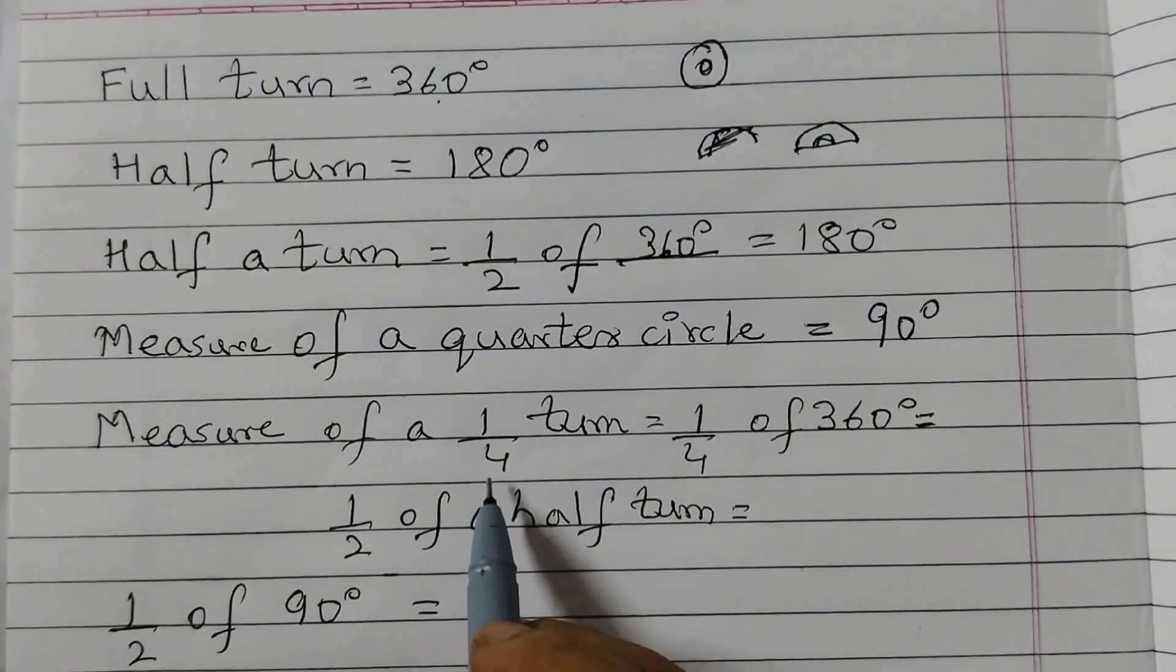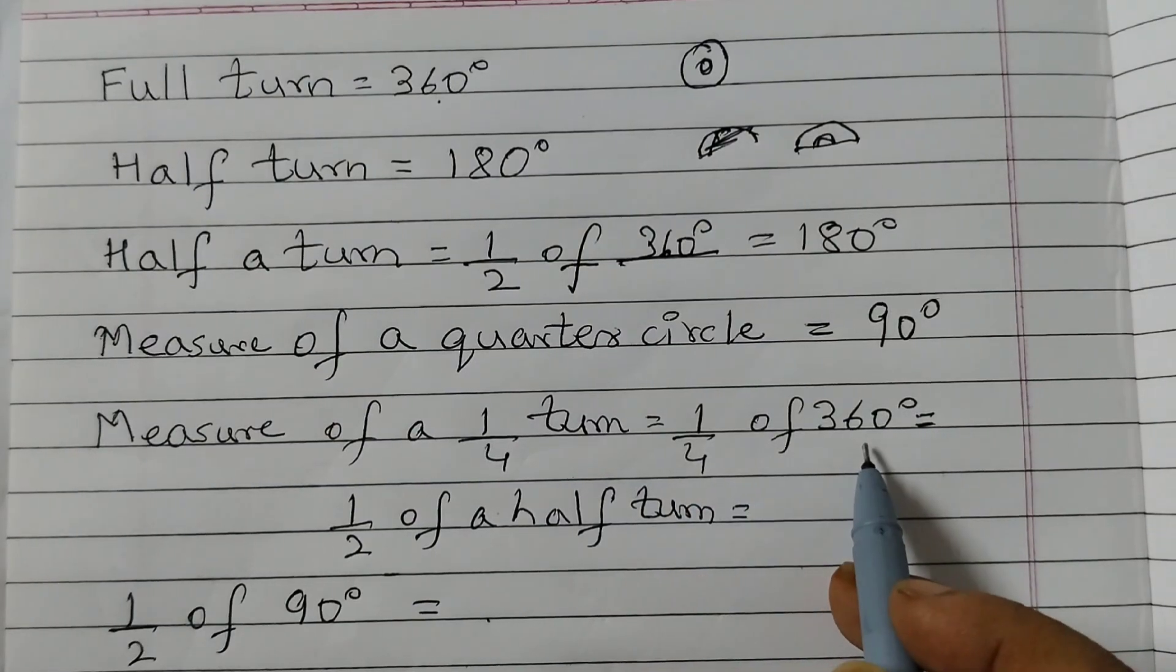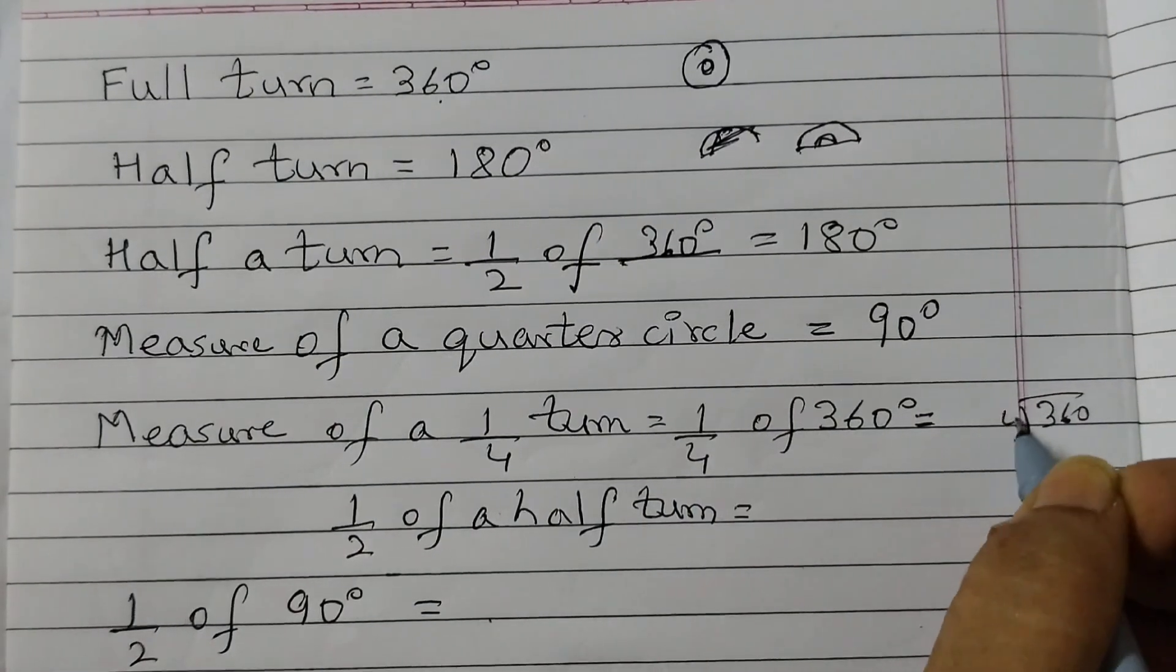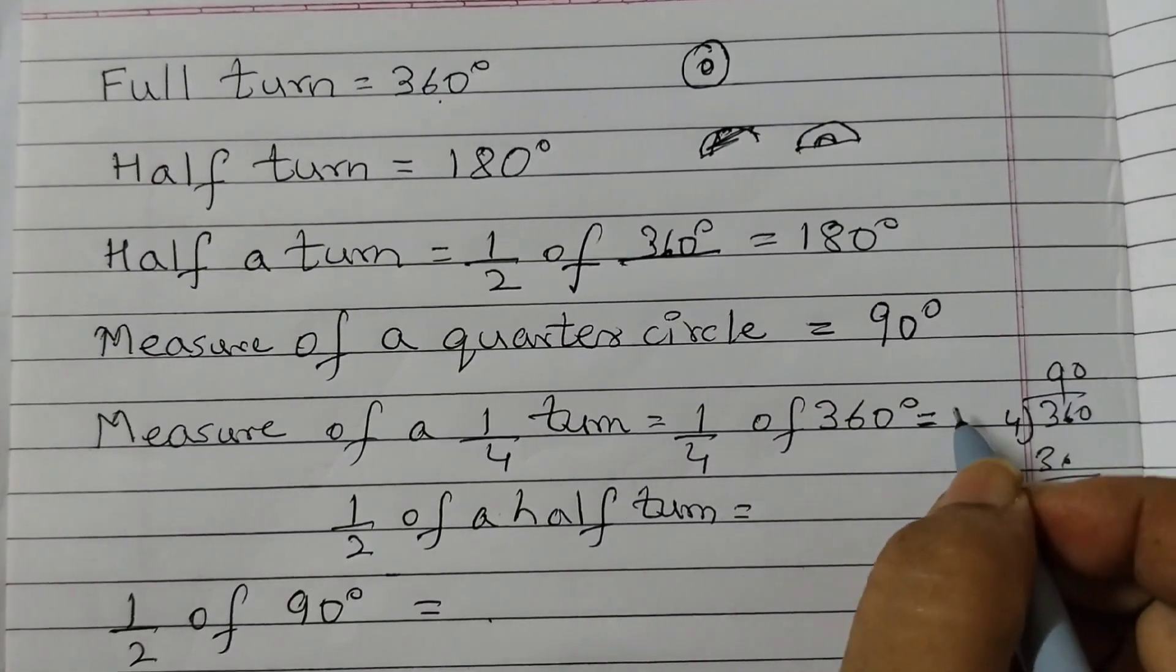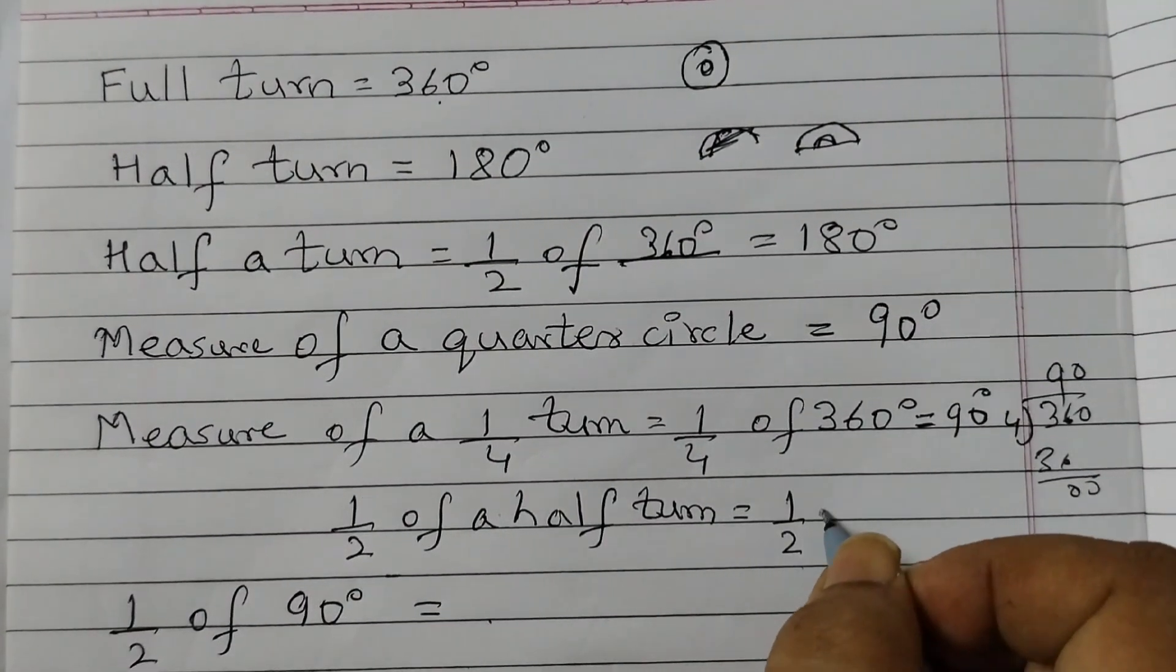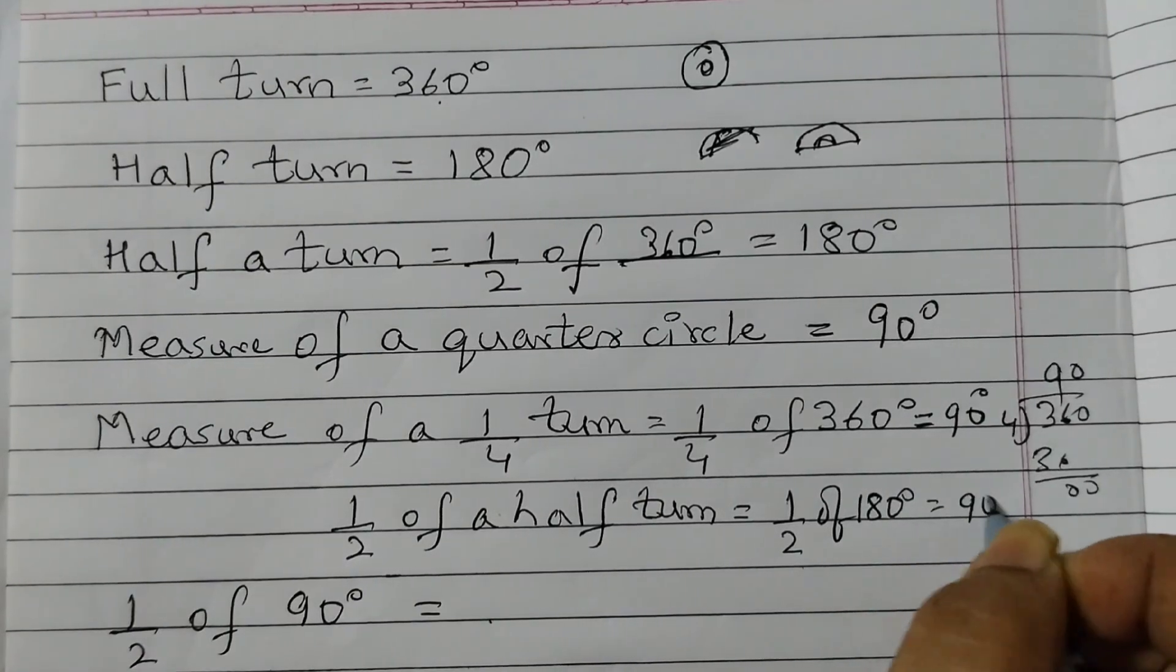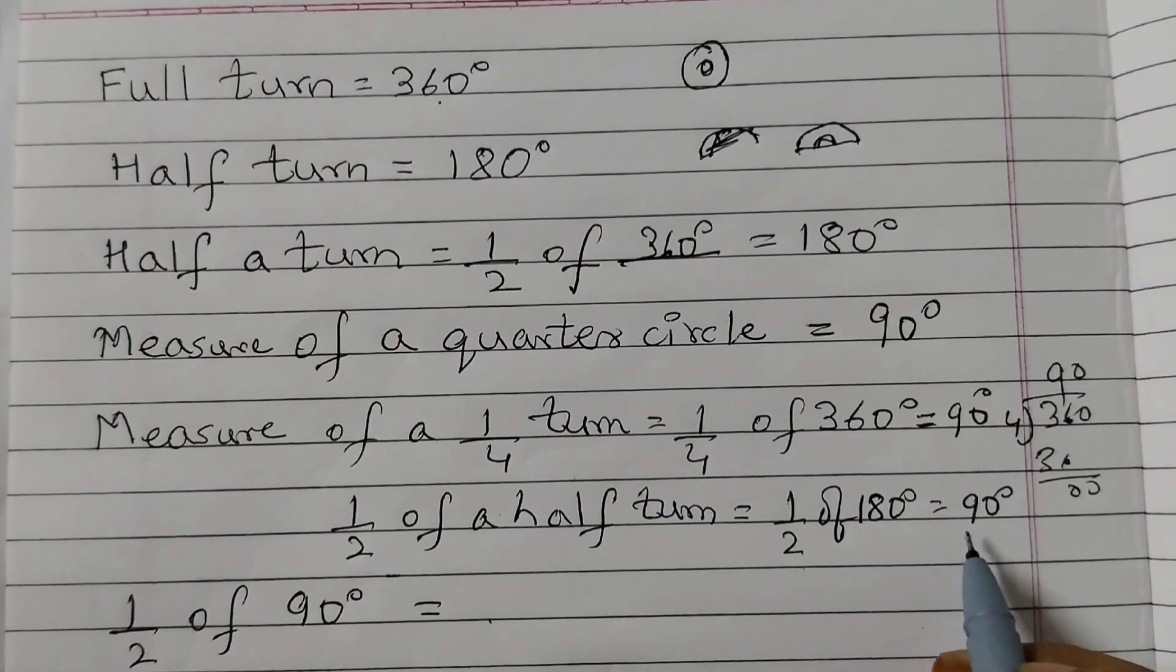Measure of a one-fourth turn: turn means 360 degrees, so one-fourth of 360 degrees would be equal to 360 divided by 4, which is 90 degrees. One half of a half turn, that means one half of 180 degrees, that is also 90 degrees. 180 divided by 2 is 90 degrees.